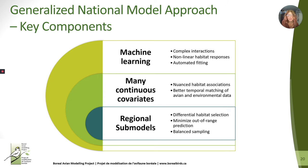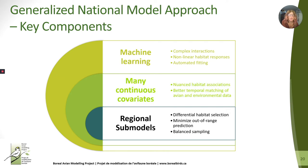To address these various challenges, we've developed a generalized national model approach focused on key components. First, we use machine learning to deal with complex variable interactions and non-linear habitat responses in an automated fashion. We include many continuous covariates to capture more nuanced habitat associations and improve the temporal correspondence between avian and environmental data. And we use regional submodels to accommodate differential habitat selection, reduce out-of-range predictions, and achieve better sampling balance.